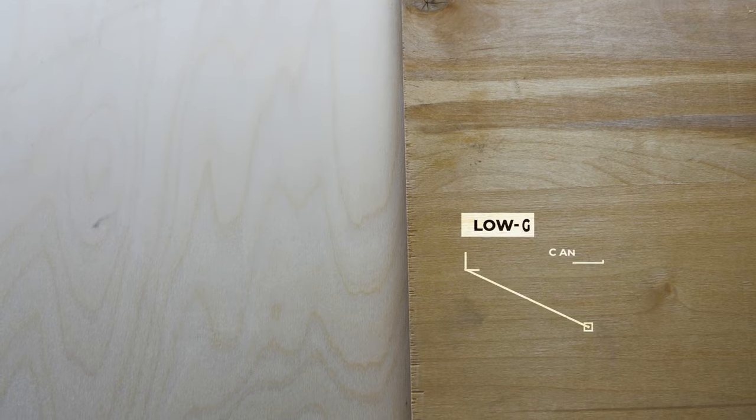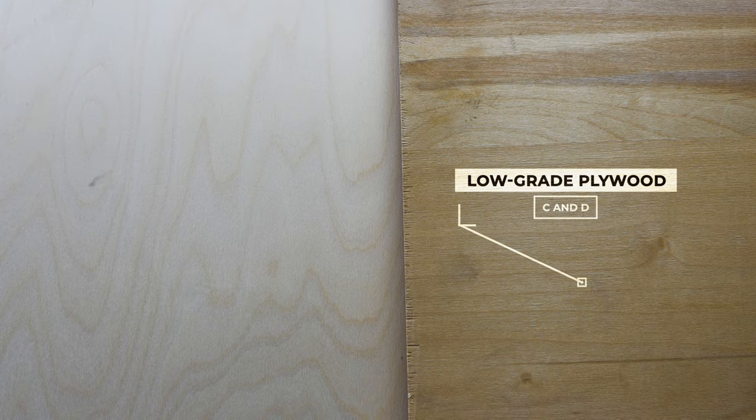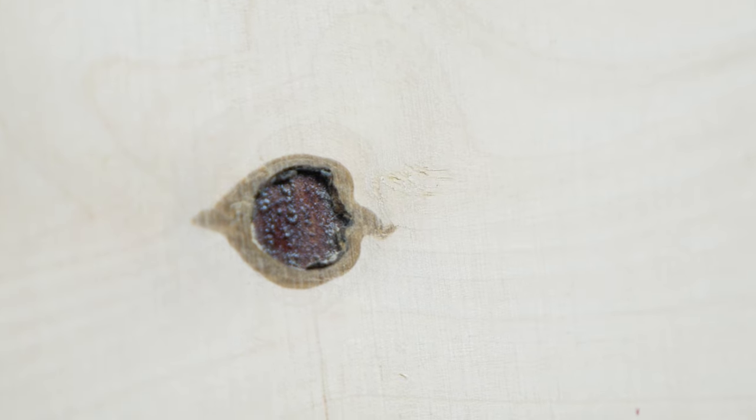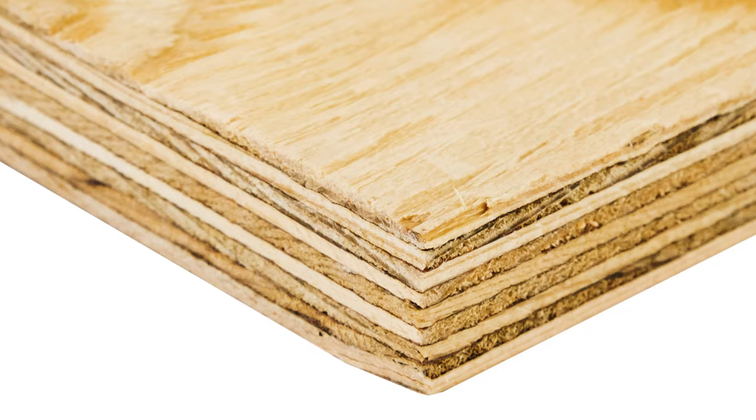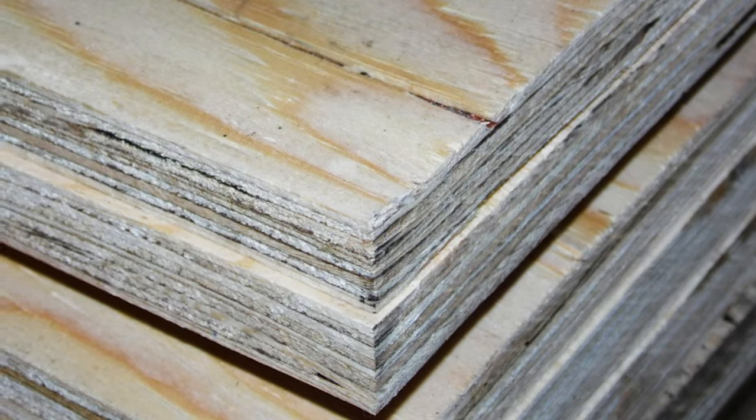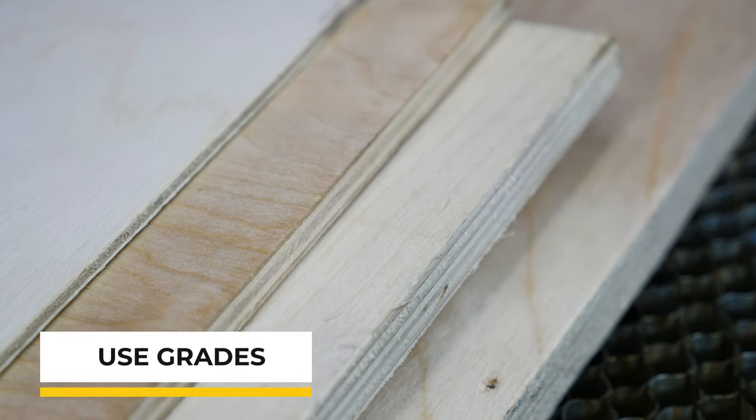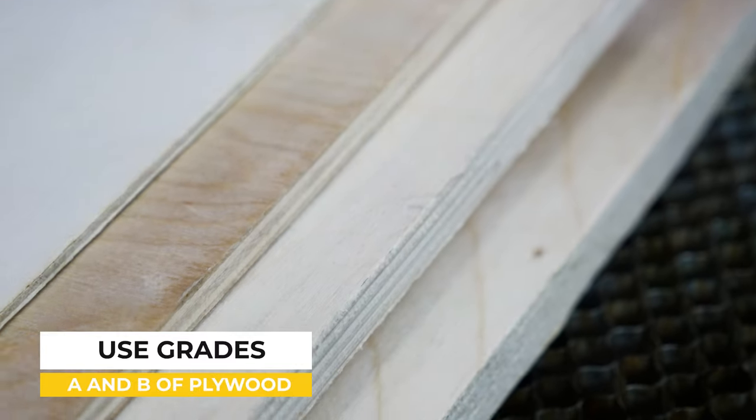Low-grade plywood C and D is not suitable for cutting with a laser machine because it has a large amount of glue and knots that will interfere with the laser. Other disadvantages of low-grade plywood include cracks, strong flexure, bubbles between veneer layers and uneven thickness of a sheet. All of these faults can result in defective products. That is why we recommend using grades A and B of plywood.